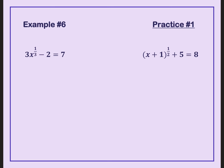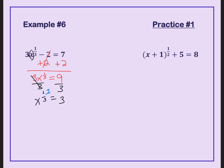Now the last example. Same concept — notice that 3x doesn't have parentheses, so the only thing raised to that one-third power is the x. Start by adding 2 to both sides, then divide by 3 on both sides. You get x to the one-third equals 3. To get rid of that one-third power, cube both sides. So 3 to the third power is 27, and x equals 27.